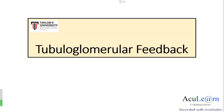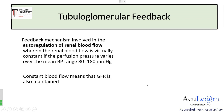In this video we'll talk about the tubuloglomerular feedback. This feedback mechanism involves the macula densa (part of the tubule) and the afferent arteriole (part of the glomerulus). It is involved in the autoregulation of renal blood flow, wherein renal blood flow is virtually kept constant when perfusion pressure varies over the mean blood pressure range of 80 to 180 mmHg.